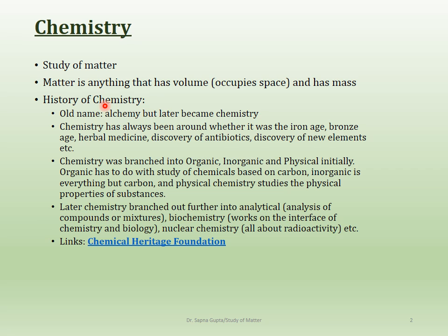Chemistry is a really very old science. The old name of chemistry was alchemy, and later it got changed to chemistry. Over the last 500 years, alchemy has changed into chemistry. It started maybe in Egypt, China, India — it started everywhere — and now of course it is still as global as it was before.